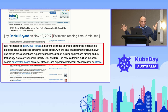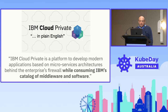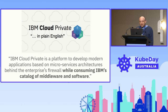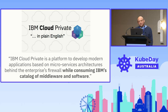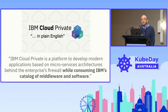It used Kubernetes, Docker, and other cool things, but that was really the goal. A blog post from IBM chief architect Hatham Ekoja, titled 'IBM Cloud Private in Plain English,' described it as a platform to develop modern applications based on microservices architectures behind the enterprise's firewall, while consuming IBM's catalog of middleware and software. It made sense, but it was closed.